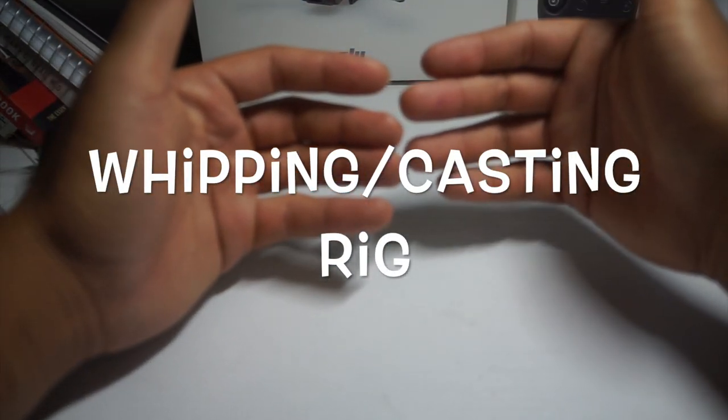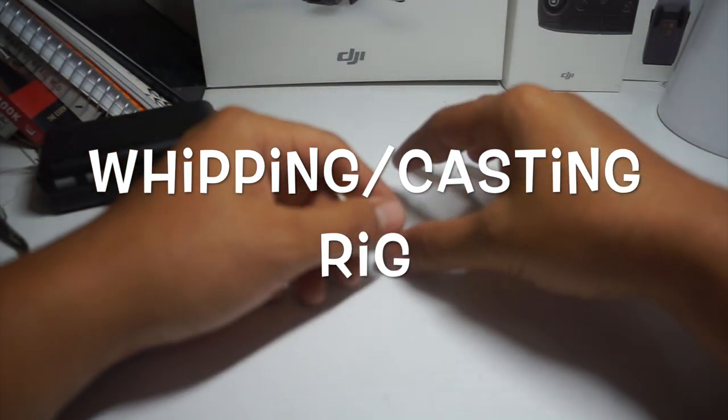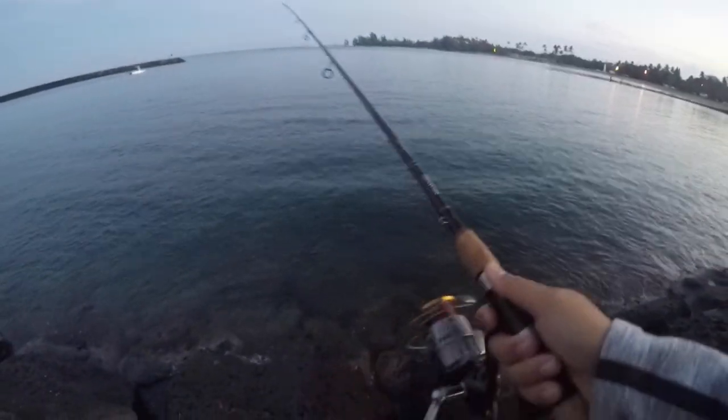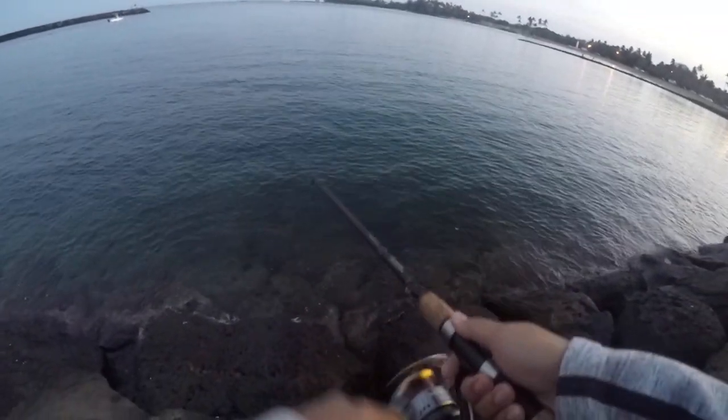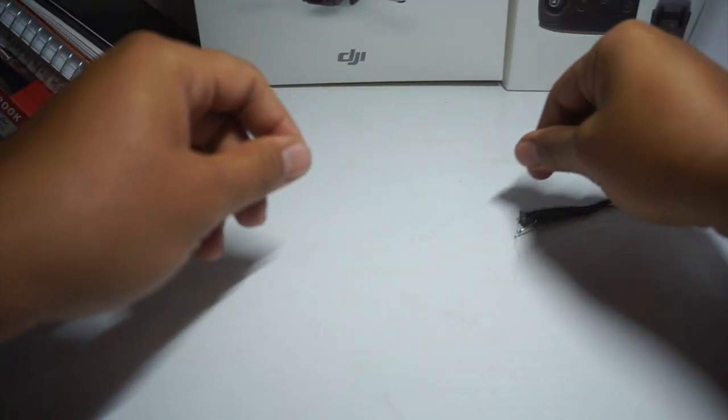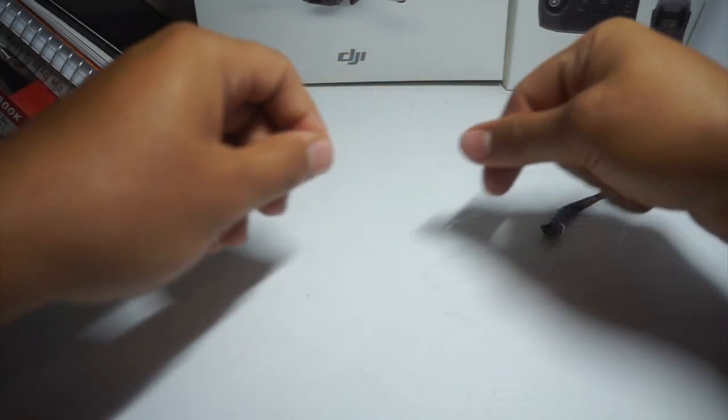I'm going to teach you how to set up a whipping rig, which is probably the most popular fishing rig or fishing style here in Hawaii. It's just a typical casting rig with a lure of your choice or any type of bait attached to a long leader line and a weight on top of that.